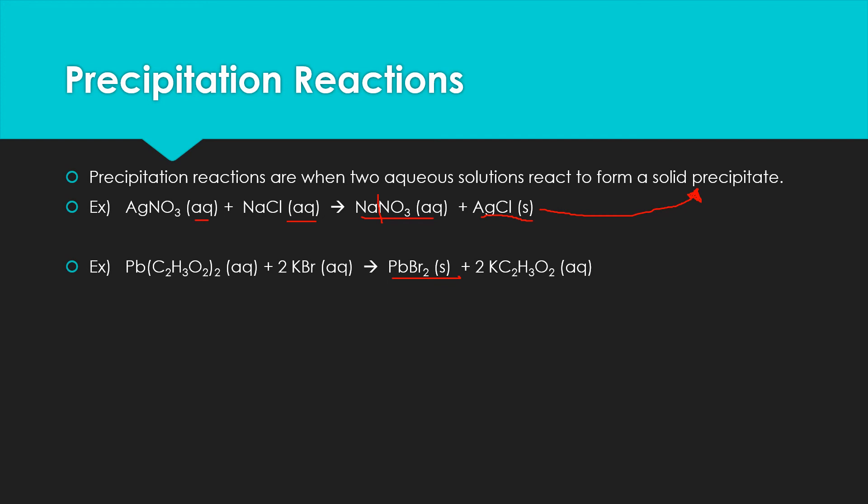In another example, we have lead acetate (aqueous) and potassium bromide (aqueous). We put them together and get lead bromide, which is insoluble — so that's our solid precipitate. Then we have aqueous potassium acetate left over, where those ions stay dissolved in solution.